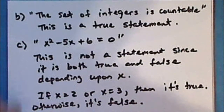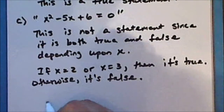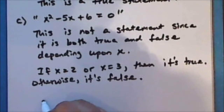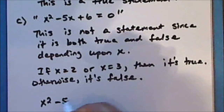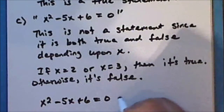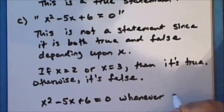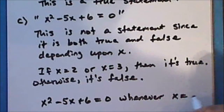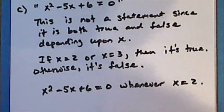We can make a statement using that equation. For example: x squared minus five x plus six is equal to zero whenever x is equal to two. This statement is a true statement.